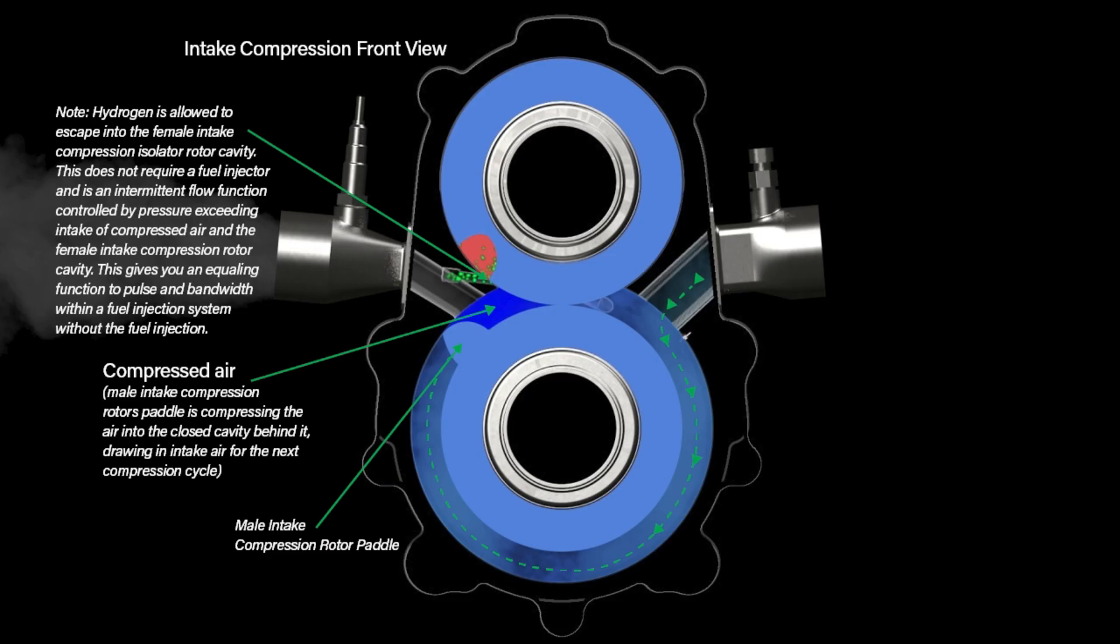Next is the intake compression front view. Note, hydrogen is allowed to escape into the female intake compression isolator rotor cavity. This does not require a fuel injector and is an intermittent flow function controlled by pressure exceeding intake of compressed air and the female intake compression rotor cavity.